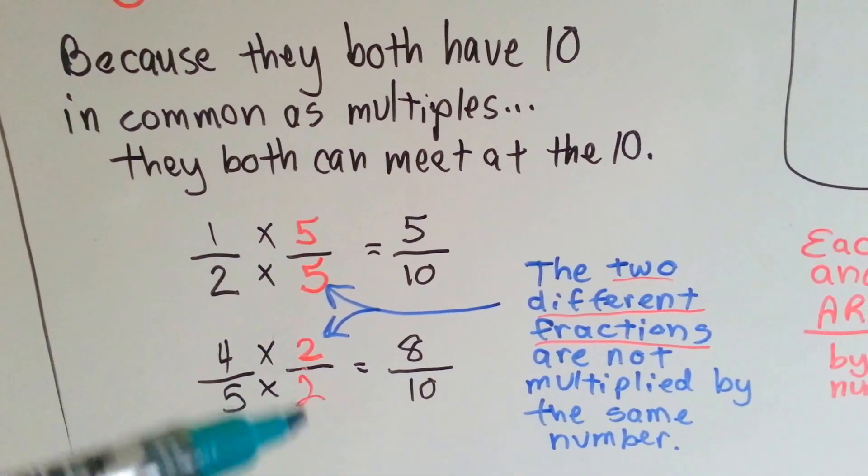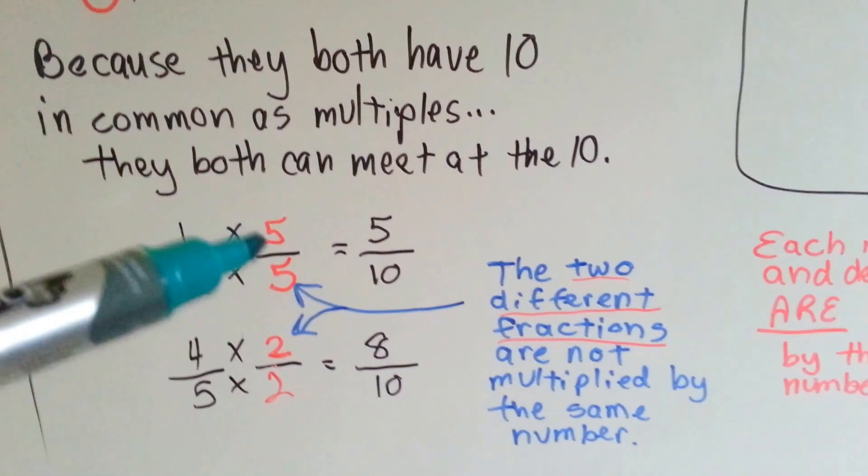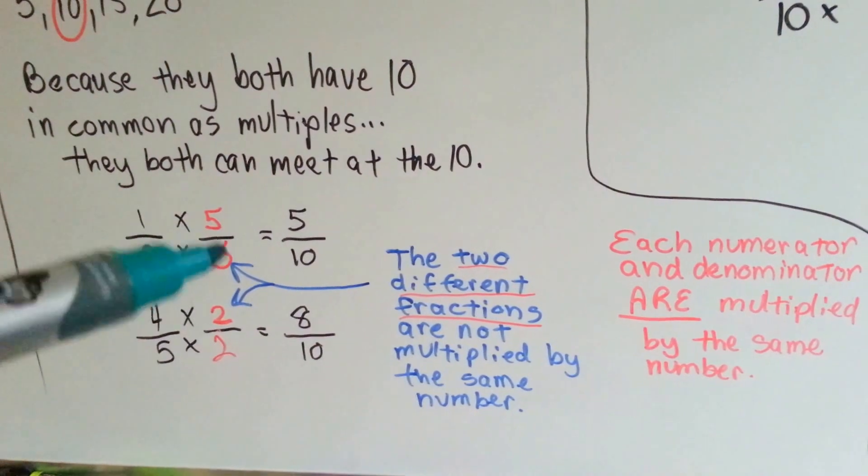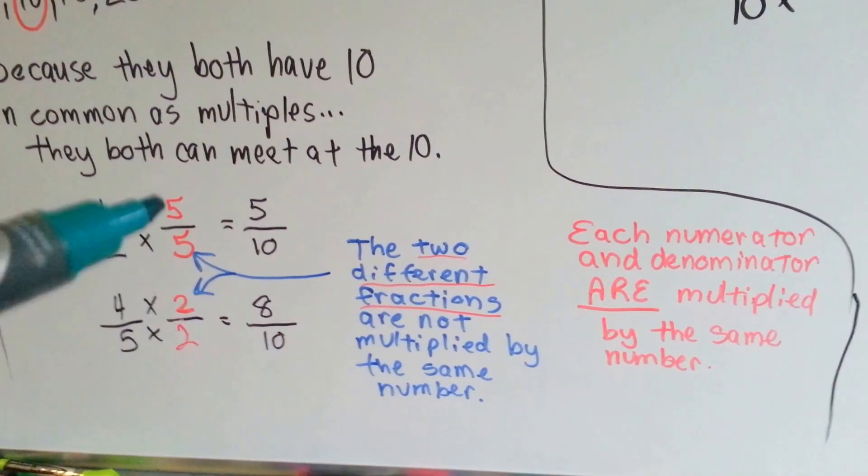The two different fractions are not multiplied by the same number. The numerators and denominators inside are, see, these are both 2, these are both 5, but 5 and 2 are not the same.